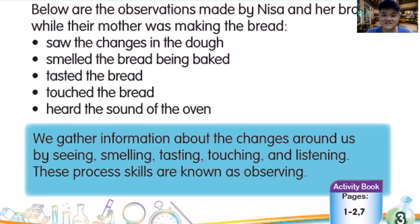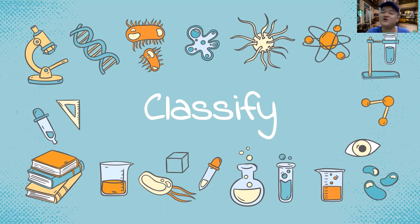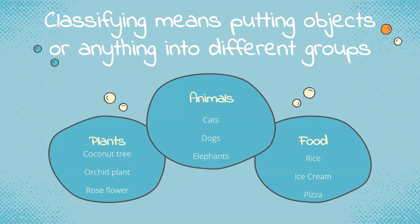Let's move on to the next slide. The second part of our lesson is classify, or classifying — another skill you must have in order to be a superb scientist. Classifying means putting objects or anything into different groups.